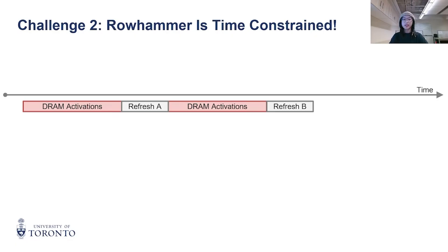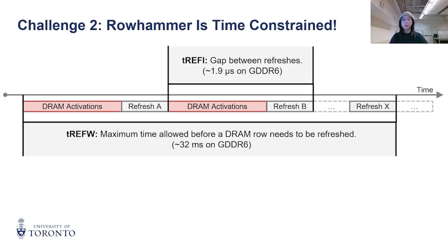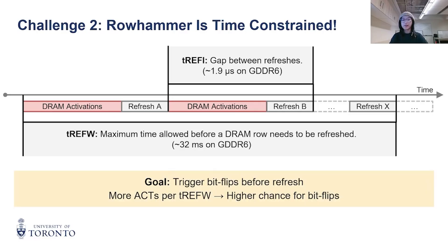In particular, refresh commands are issued once every tREFI, or 1.9 microseconds on GDDR6, and all rows must be refreshed within a tREFW of 32 milliseconds. Hence, we need to hammer with high enough intensity to trigger bit flips before the victim rows get refreshed, which motivates us to issue as many activations as possible within tREFW.